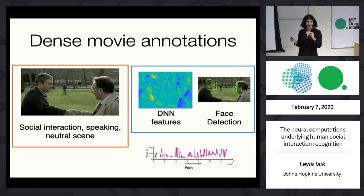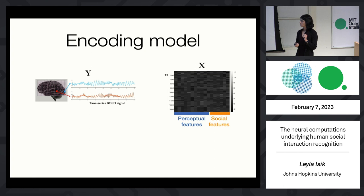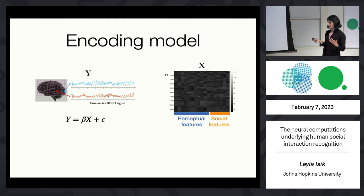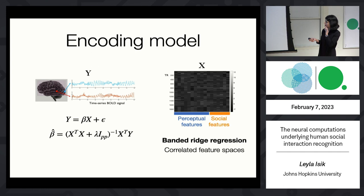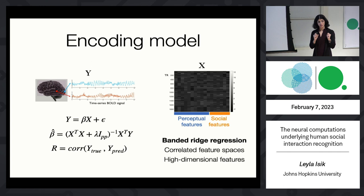All of these features are really tightly correlated — that's important to keep in mind. To understand each feature's contribution to brain activity, we learned an encoding model linking activity in each voxel over the course of the movie to the feature representations over the course of the movie. We learned a linear mapping using banded ridge regression, which helps deal with correlated feature spaces and accounts for the fact that some features like the deep neural network output are very high dimensional while others are unit dimensional. We train the encoding model on one subset of the movie and make predictions on held-out data, using correlation between true and predicted voxel activity as our accuracy metric.